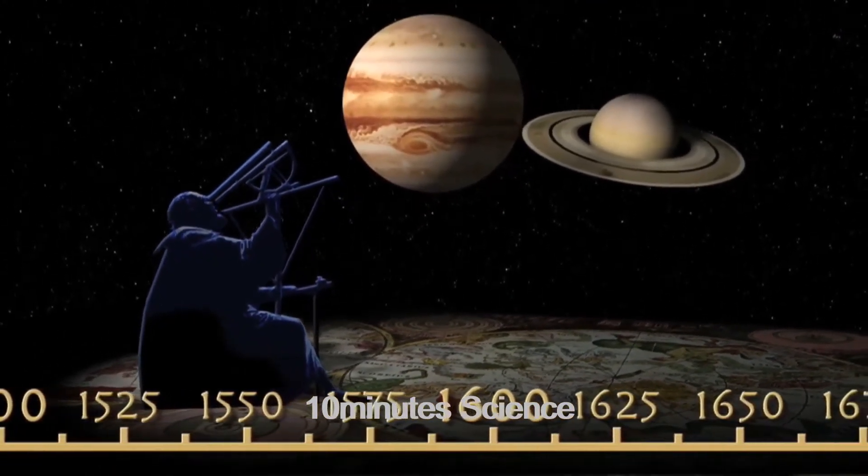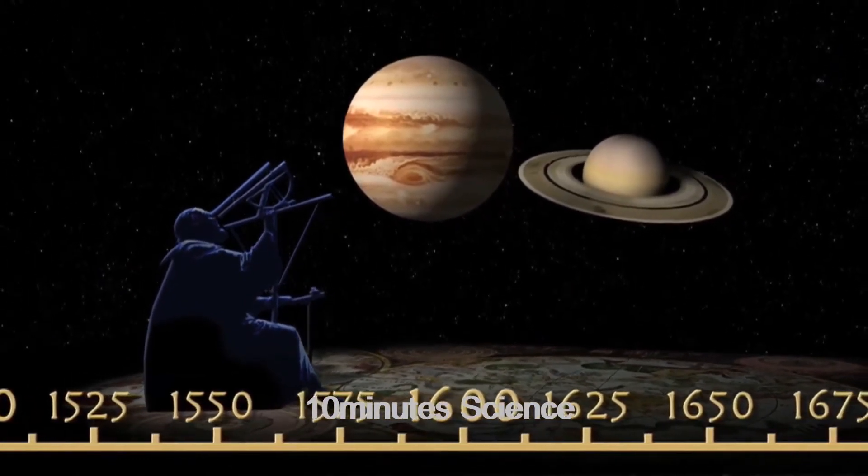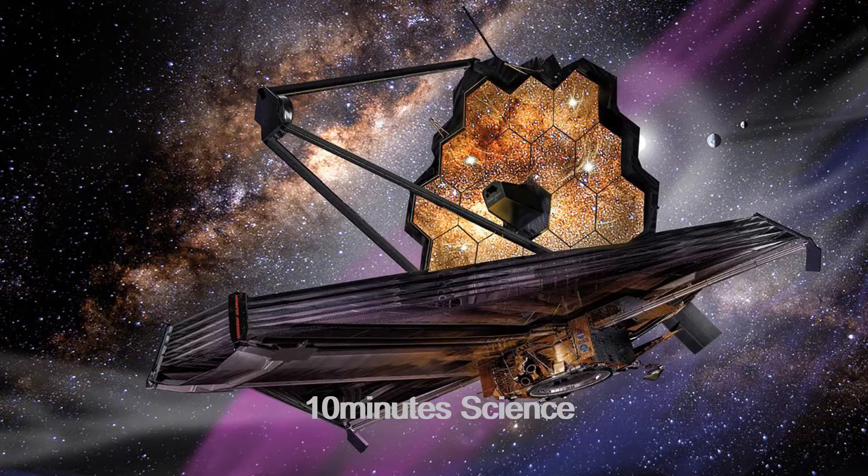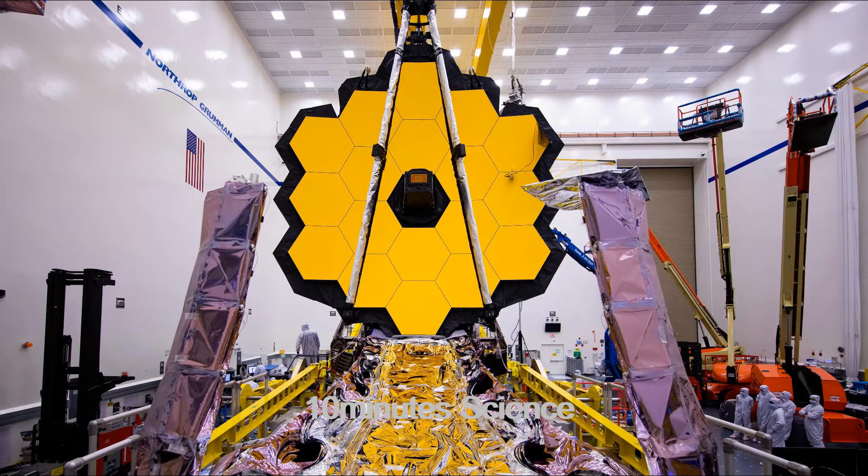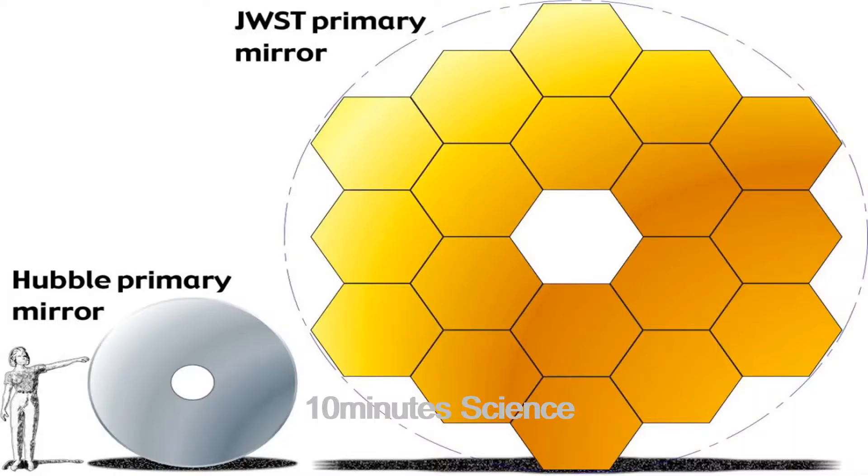Webb is about the size of a tennis court. It's so big it had to be folded to fit inside its launch rocket. It has a mirror roughly 6 times the collecting size of Hubble's and is 100 times more sensitive.